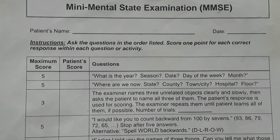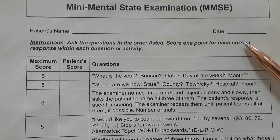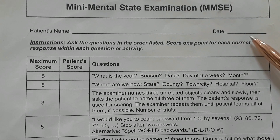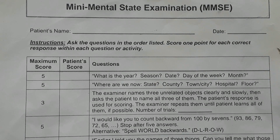The Mini Mental State Examination, also called the MMSE scale, is used to assess cognition and higher mental functions. It is especially used in patients with dementia. The total score is out of 30, and the interpretation is a score of more than 25 is considered normal.